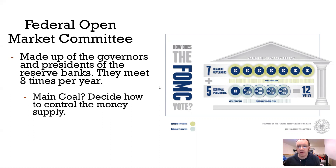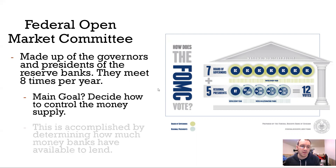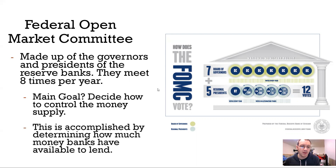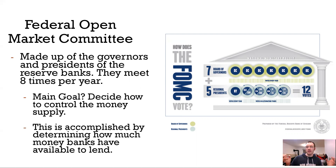And the main goal is to decide how to control the money supply in the United States — how do we control the billions of dollars that are floating around? Do we need to add more? Do we need less? This is accomplished by determining how much money banks have available to lend. Banks are required to put some of their money into the Federal Reserve.